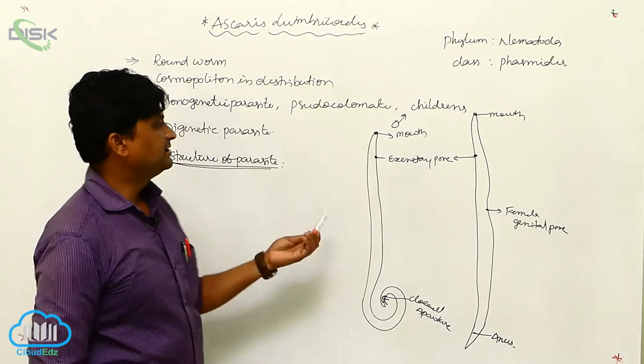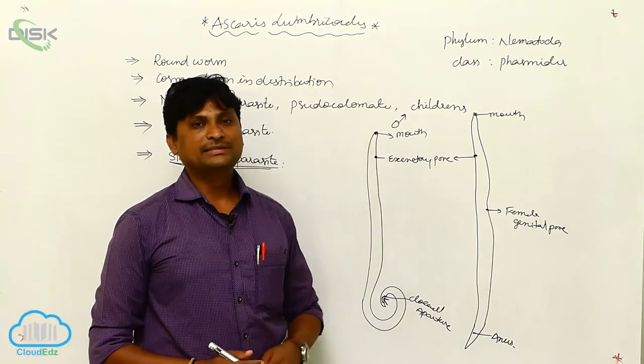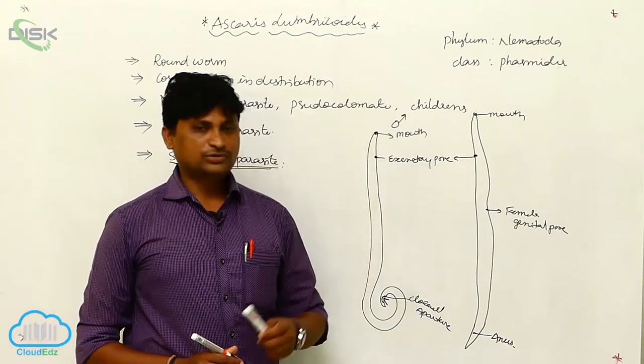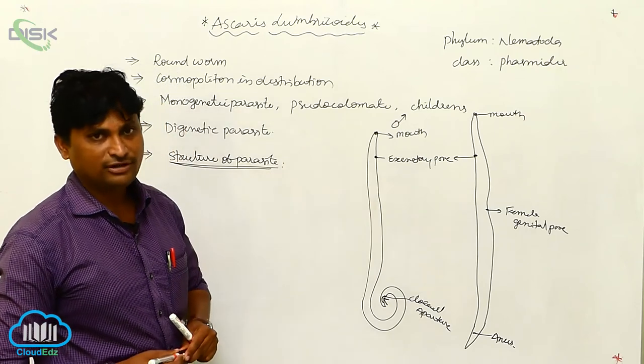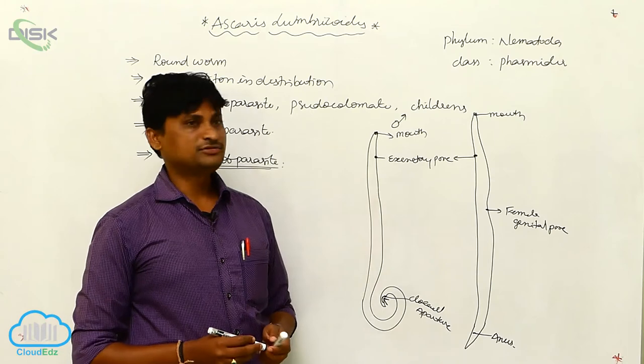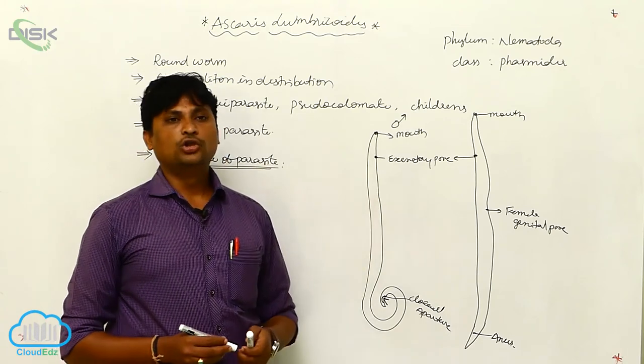It lives basically in the small intestine of human beings. The infective stage is the second stage rhabditiform larva. This is the infective stage of Ascaris Lumbricoides.